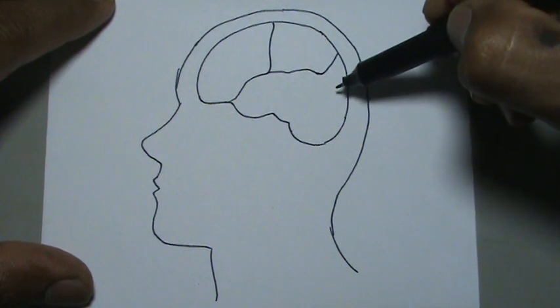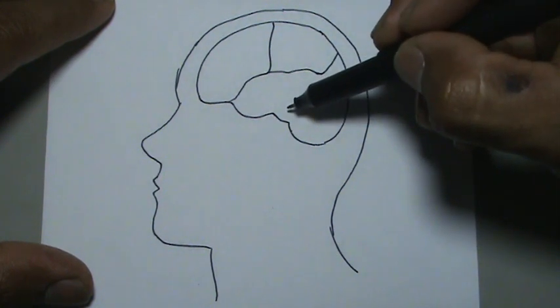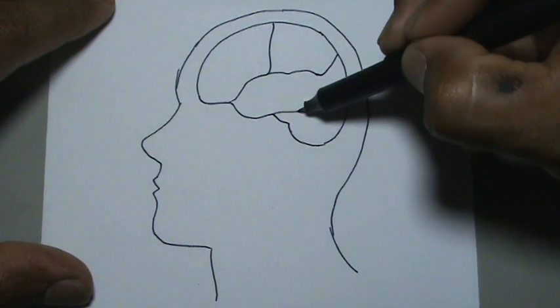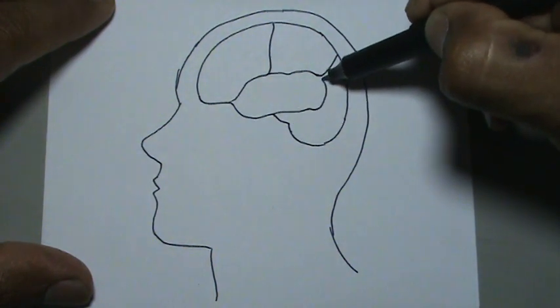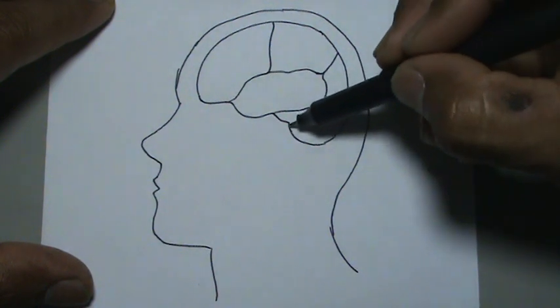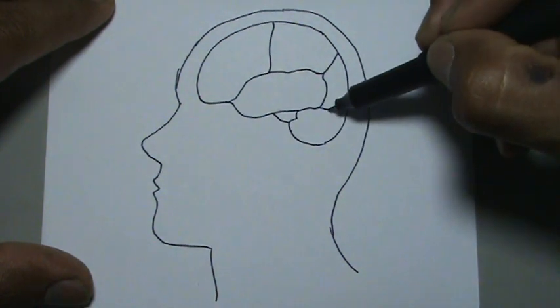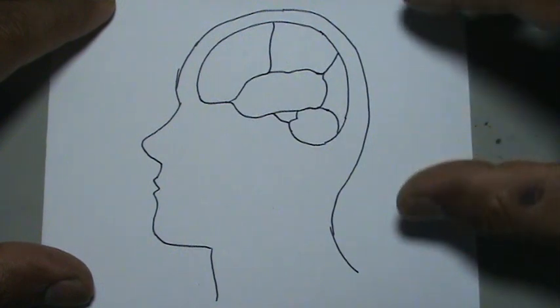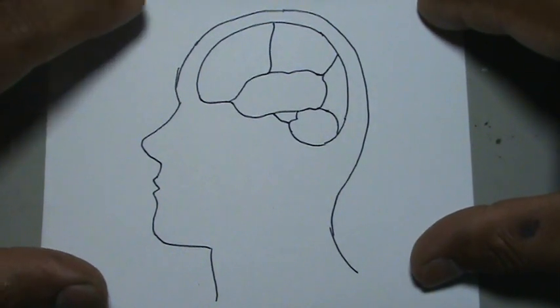Otro bloque, dibujamos acá atrás en la parte de abajo, otro bloquecito en la parte central, y acá atrás viene otro bloquecito. Tenemos estos bloques principales.